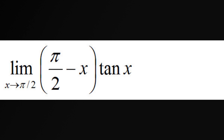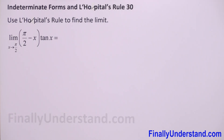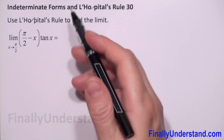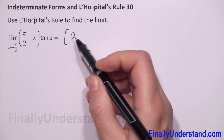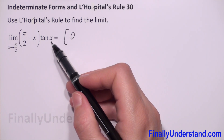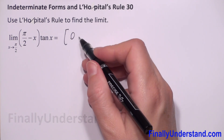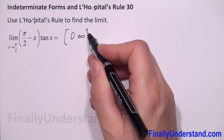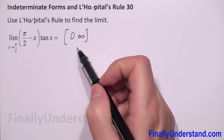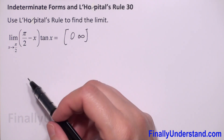When we use L'Hôpital's rule, we have to have 0 over 0 or infinity over infinity. In this case, we have pi over 2 minus pi over 2, so we have 0, and tangent when x approaches pi over 2 goes to infinity, so we have 0 times infinity. We cannot use L'Hôpital's rule now — we have to rewrite this function.